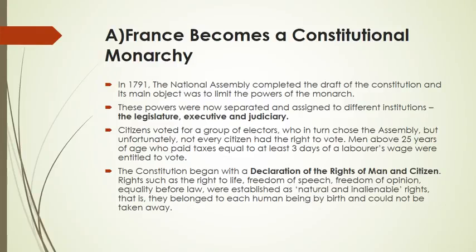Now the question arises, what is constitutional monarchy? A constitutional monarchy is a system where the king is there only for namesake, but the real power lies in the hands of the constitution. The ruler, the king, will not be able to rule on his own — his powers will be limited. For example, in present time Britain has monarchy, but they have to follow what the parliament says.